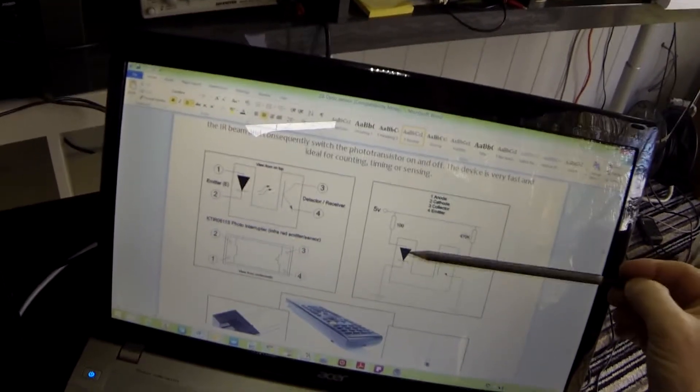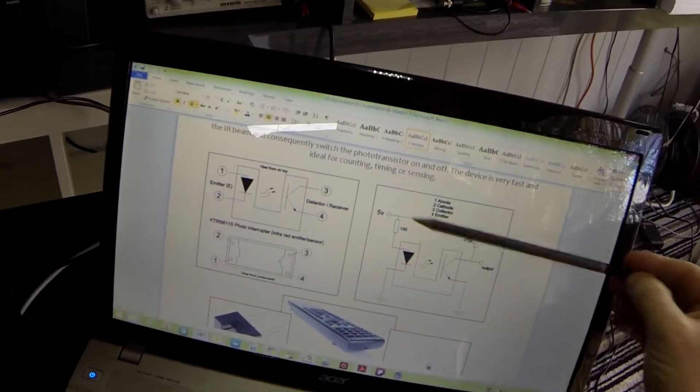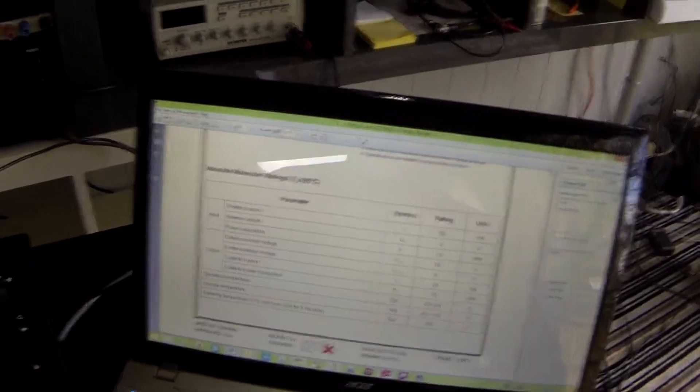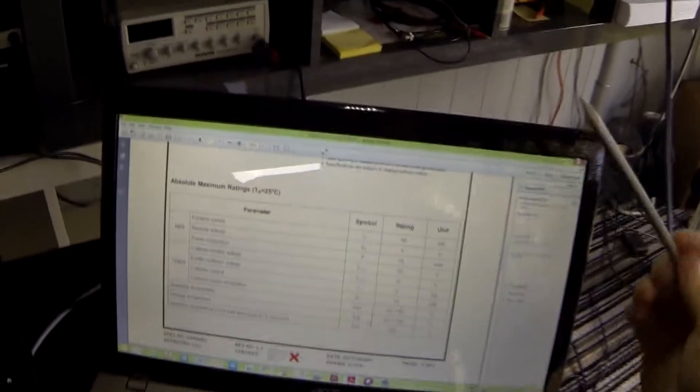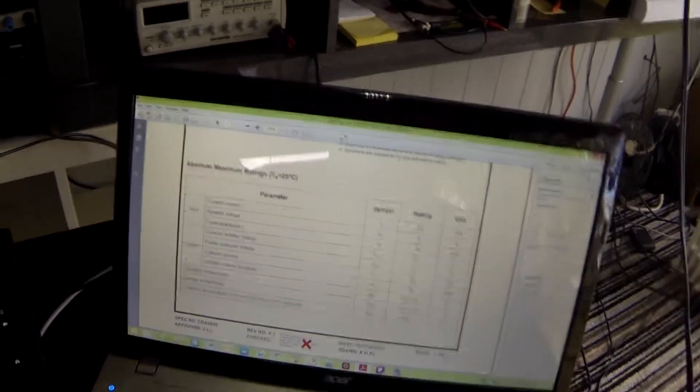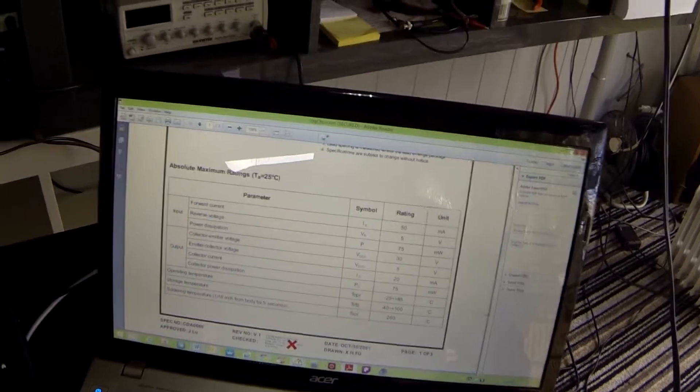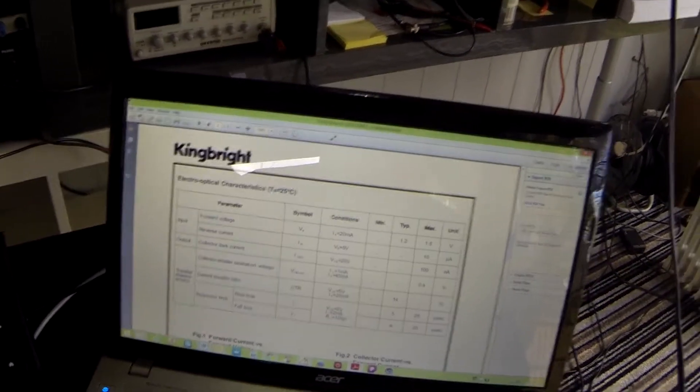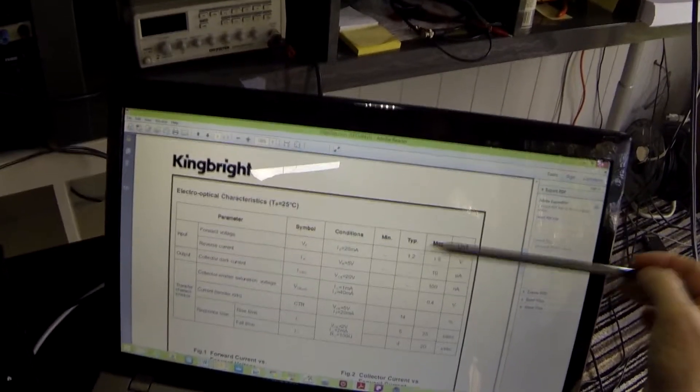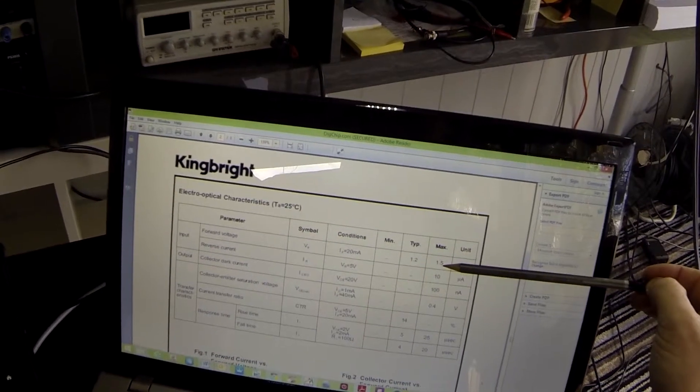A little point on this: because this is an LED it requires a current limiting resistor. If we have a quick look at the data sheet, it tells us that the maximum forward current here is about 50 milliamps which is slightly higher than most LEDs, and the typical forward voltage is 1.2 with the maximum 1.5.